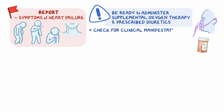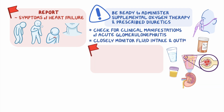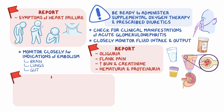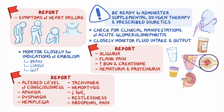Check your client for clinical manifestations of acute glomerulonephritis. Closely monitor their fluid intake and output, and report assessment findings like oliguria, flank pain, increased BUN and creatinine, or hematuria and proteinuria. Also, be sure to monitor your client closely for indications of embolism, especially to the brain, lungs, or gut, and immediately report if they develop clinical manifestations like altered level of consciousness, aphasia, dysphagia, or hemiplegia, as well as tachypnea, hemoptysis, decreased SpO2, and restlessness or abdominal pain. Be ready to intervene and stabilize your client as ordered.